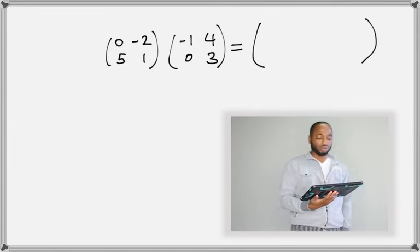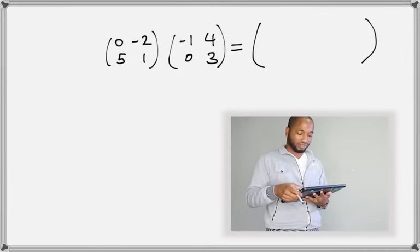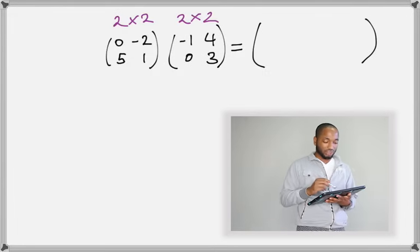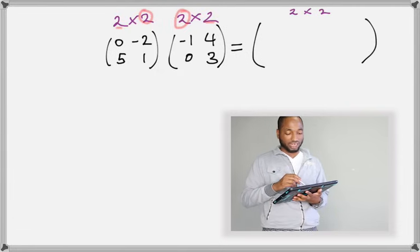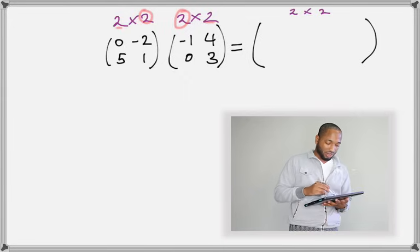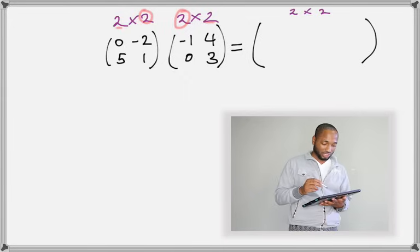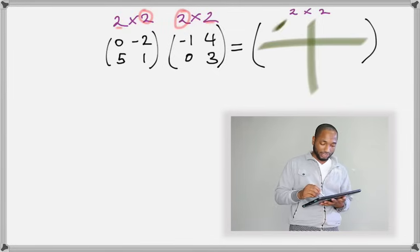Our next style: a two by two multiplied by a two by two. Is this possible? Since the numbers on the inside are the same, yes, it is possible. Also, the outside numbers tell me the answer I'm going to get — it's going to be a two by two matrix. The multiplication part can get a little tricky; it's going to be row by column. In this matrix we're going to get four separate elements — something here, here, here, and here — because it's a two by two matrix.